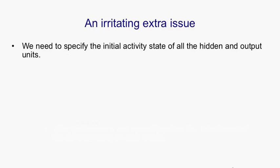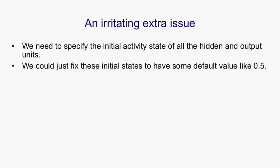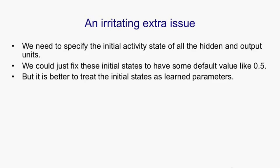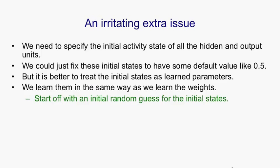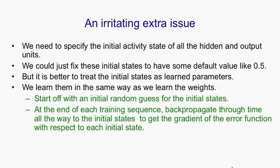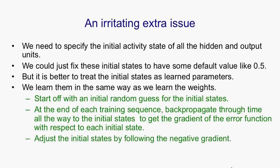There's an irritating extra issue. If we don't specify the initial state of all the units, for example if some of them are hidden or output units, then we have to start them off in some particular state. We could just fix those initial states to have some default value like 0.5, but that might make the system work not quite as well. So we can actually learn the initial states. We treat them like parameters rather than activities, and we learn them the same way as we learn the weights. We start off with an initial random guess for the initial states, and then at the end of each training sequence, we backpropagate through time all the way back to the initial states. That gives us the gradient of the error function with respect to the initial state. We then adjust the initial states by following that gradient downhill, and that gives us new initial states that are slightly different.